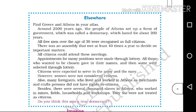All free men over the age of 30 were recognized as full citizens. There was an assembly that met at least 40 times a year to decide on important matters. All citizens could attend these meetings. Appointments for many positions were made through lottery — those who wanted to be chosen gave their names and some were selected by lot.